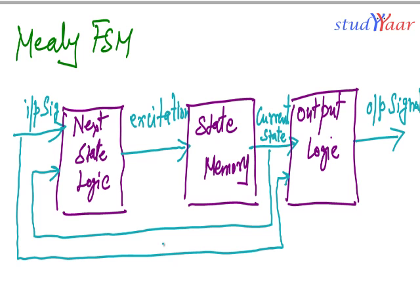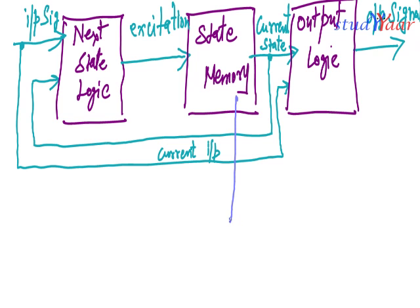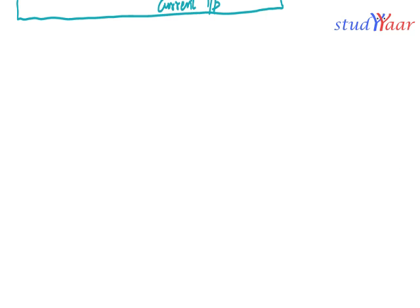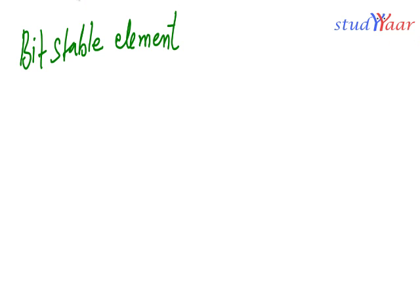This is your current input — that was about your melee FSM. Now that we have seen what is melee FSM, we are going to understand what is state memory. For that, we are first going to look at the most basic memory element which is able to store one bit of information. That basic memory element is known as a bit-stable element. A bit-stable element stores one bit forever.